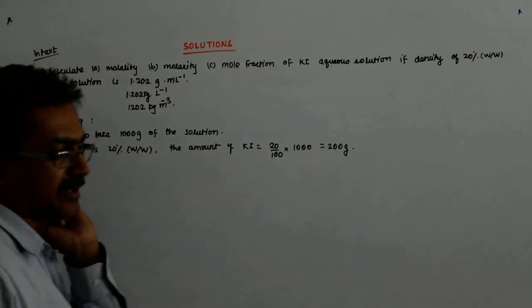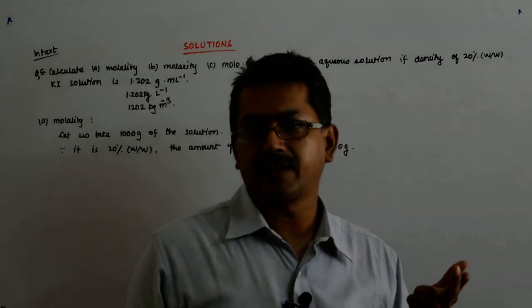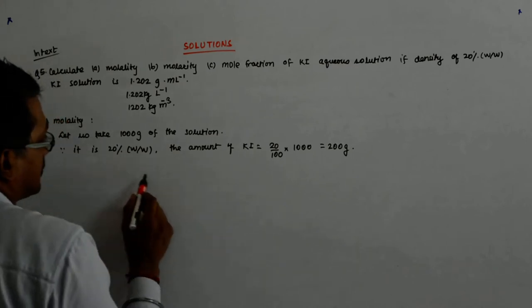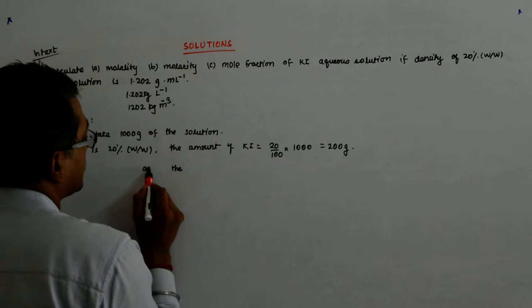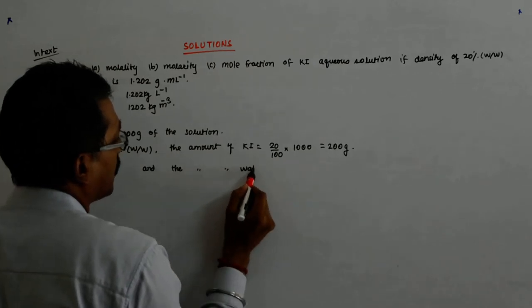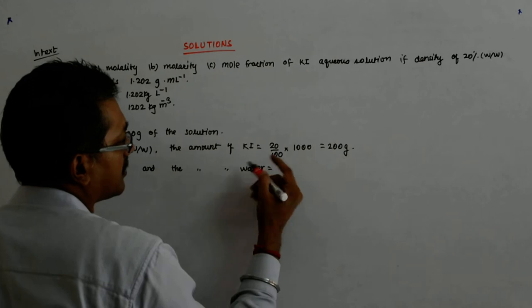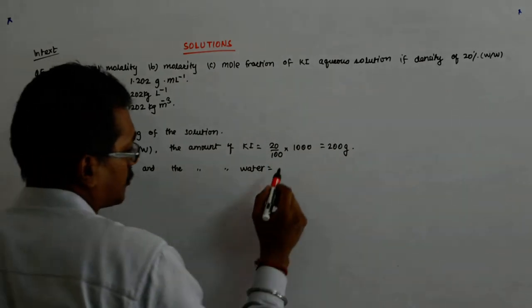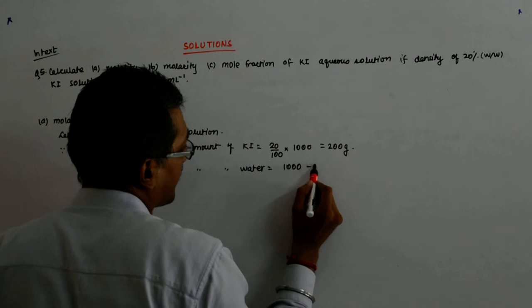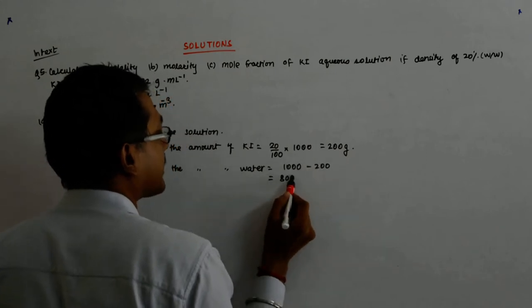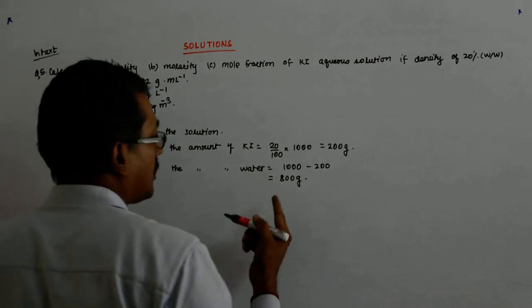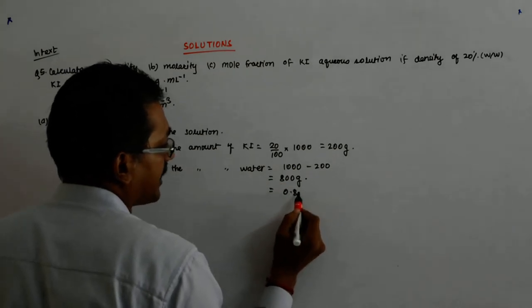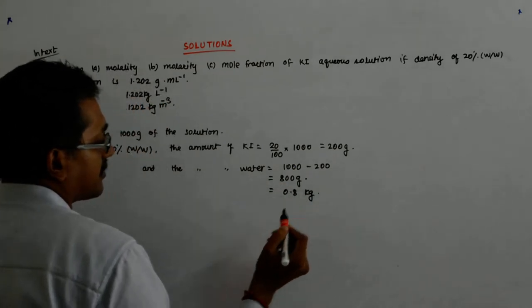Since it is 20%, the amount of KI is 20 upon 100 into 1000, that's 200 grams. And the amount of water is the remaining, so 1000 minus 200 is equal to 800 grams, which is equal to 0.8 kg.